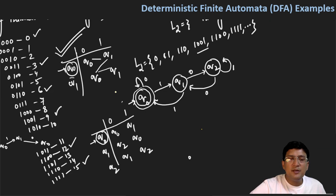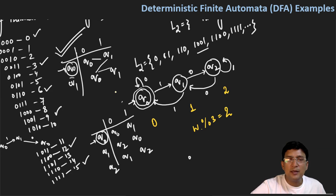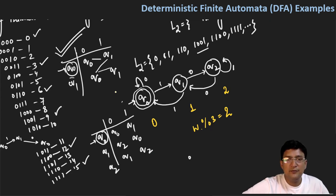In this automata, q0 state represents divisibility with 3 equals to 0, q1 represents divisibility with 3 equal to 1, and q2 represents divisibility with 3 equal to 2. So if you want to accept binary numbers where mod 3 equals 2, q2 will be the final state — there will be no change in the transition table, only the final state changes.